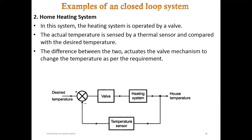A second example is the home heating system. The desired temperature is set and a feedback loop is provided by a temperature sensor. The heating system continuously heats, and the temperature sensor senses the temperature. Once the desired temperature is reached, the error signal is given to the control element, the valve is closed, the heating system no longer gets its input, it slows down, and the room attains the desired temperature.